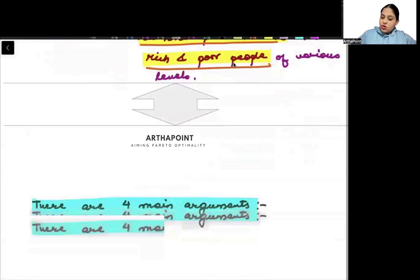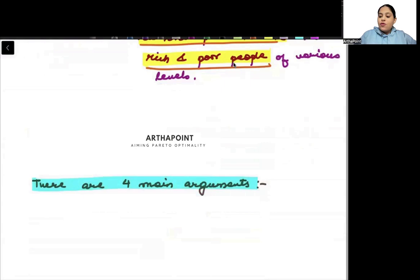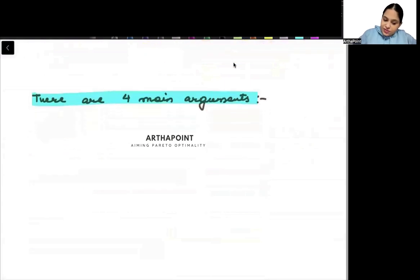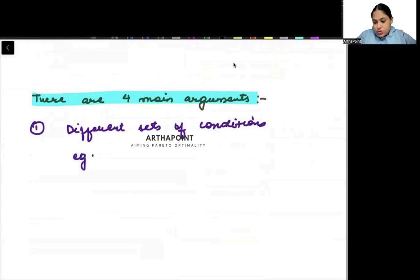The dualism concept works on four main arguments. Four arguments. First, different sets of conditions. Different set of conditions. For example, if we talk about the Lewis model, there is existence of modern and traditional sector, isn't it?